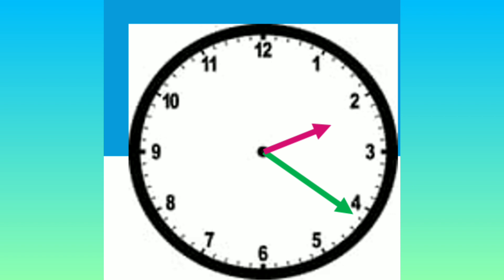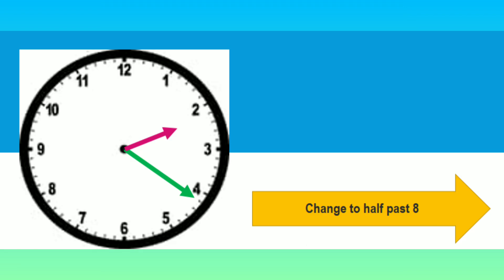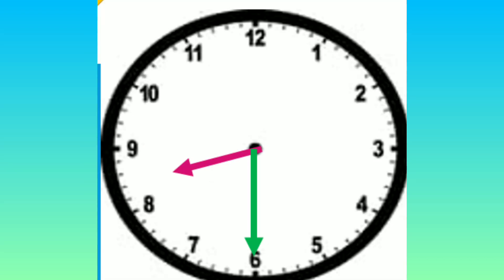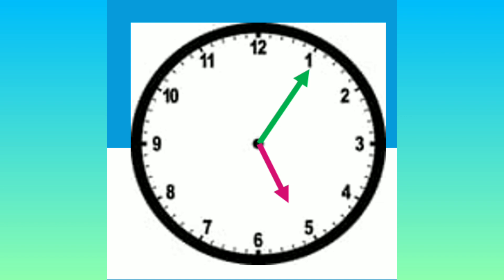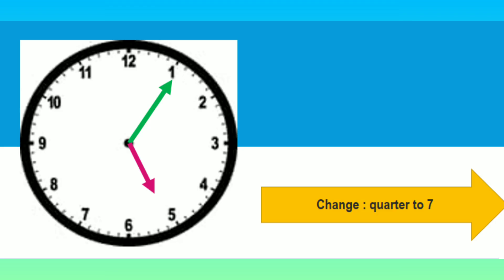Change to half past eight — eight hours thirty minutes. Look at the clock. What time is it? The time is five five — five hours five minutes. Now change to quarter to seven. What will be the time?